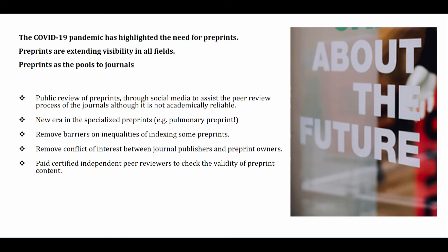Third is the removal of barriers and inequalities in the indexing of preprints. Some preprints are currently indexed in well-known indexing sources; however, some are not. In the future, these barriers and inequalities will be removed. The fourth is the removal of conflicts of interest between journal publishers and preprint owners. Currently, some official and well-known journal publishers have their own preprints as well.